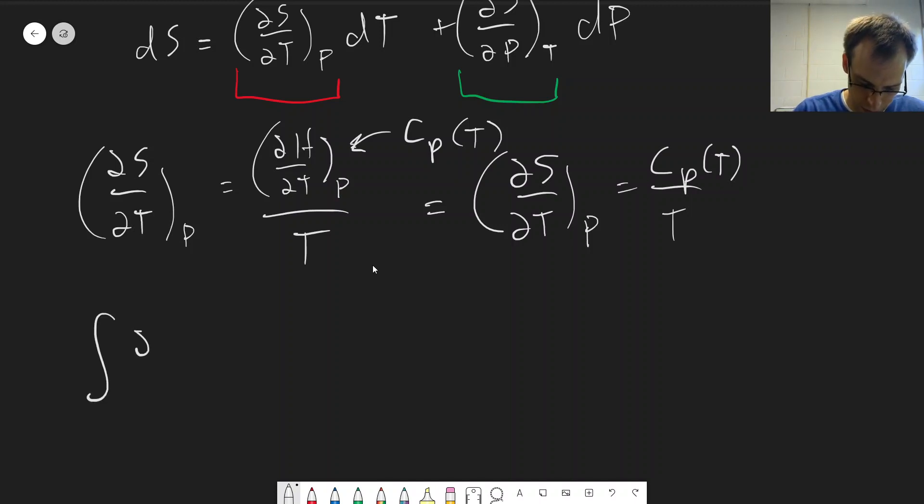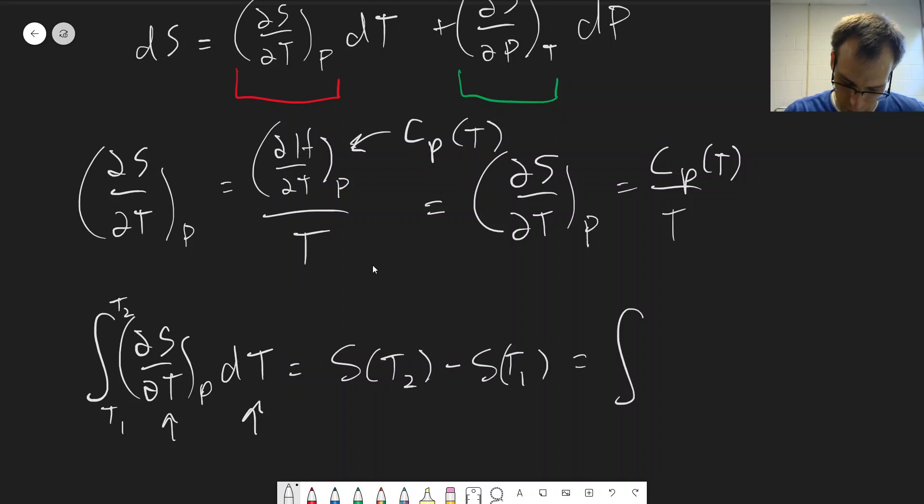So we can integrate (dS/dT) at constant P. Sorry, not dP, dT. Because these need to match down here. Integrate from T1 to T2. This is analogous to what we had before.